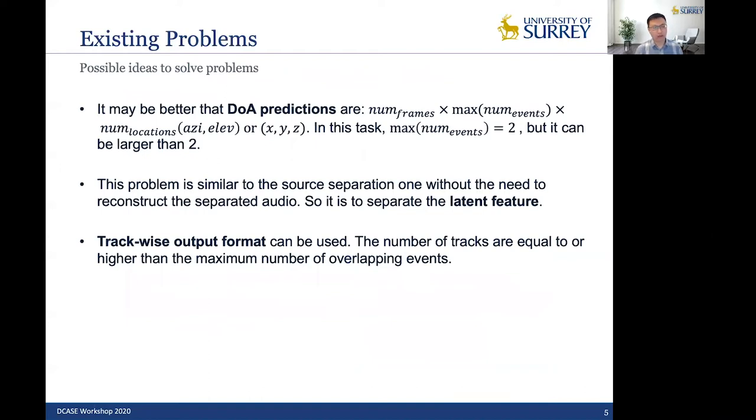So the possible idea is to solve the problems. For DOA predictions, it is better that we make this output format to be number of frames by maximum of number of events by number of localizations. In this task, the maximum number of events is two, because there are up to two overlapping events. But it can be larger than two, according to different tasks, of course.